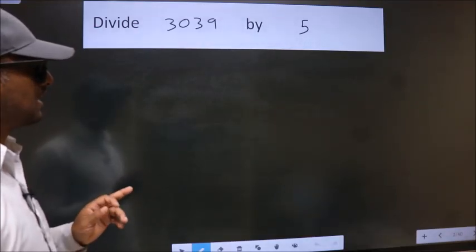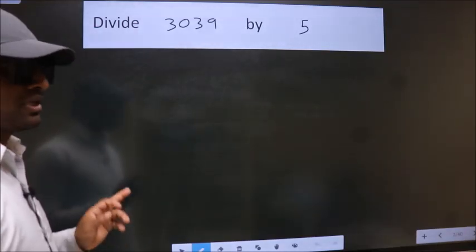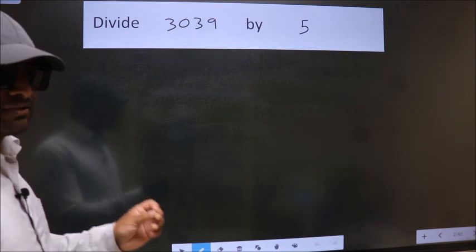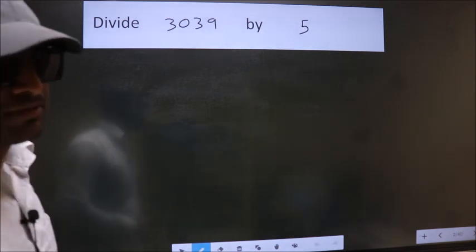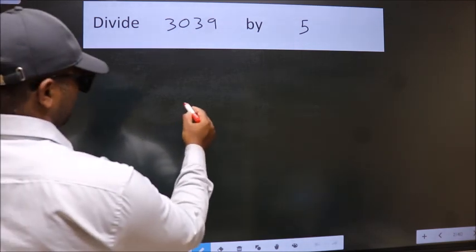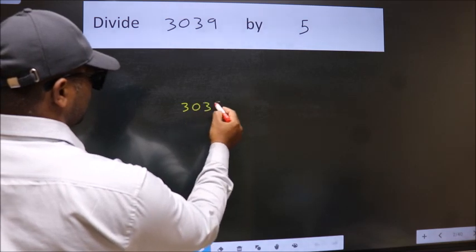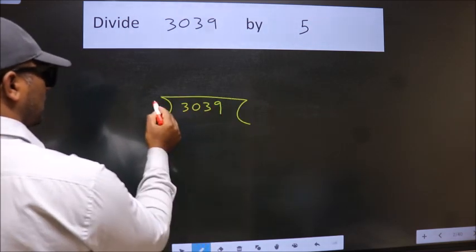Divide 3039 by 5. To do this division, we should frame it in this way: 3039 here, 5 here.